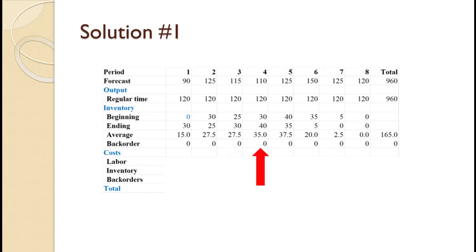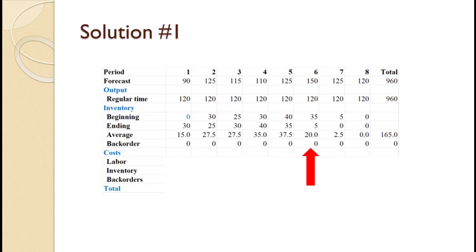For period 4, beginning inventory of 30 plus production of 120 minus demand of 110 yields an ending inventory of 40. That averages to 35. For period 5, beginning inventory of 40 plus production of 120 minus demand of 125 yields an ending inventory of 35. That averages to 37.5. For period 6, beginning inventory of 35 plus production of 120 minus demand of 150 yields an ending inventory of 5. That averages to 20. For period 7, beginning inventory of 5 plus production of 120 minus demand of 125 yields an ending inventory of 0. That averages to 2.5.